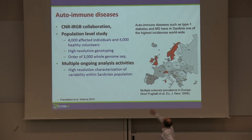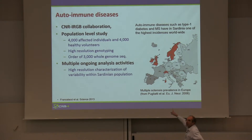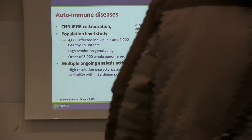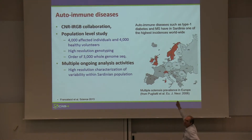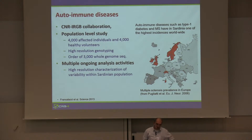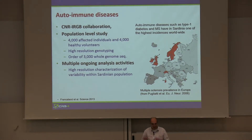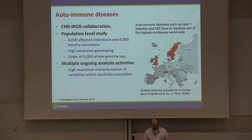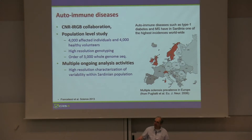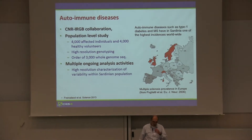Sardinia has a particularly high incidence of autoimmune diseases like diabetes type 1 and multiple sclerosis. If you look at the graph, you see there is a gradient that goes from northern countries down south, and Sardinia comes back up on the map with a very high incidence. There are ongoing studies based on a cohort of about 4,000 people affected and 4,000 healthy volunteers conducted by CNR — the Italian National Research Council, IRGV — the specific lab in Sardinia that we are collaborating with.